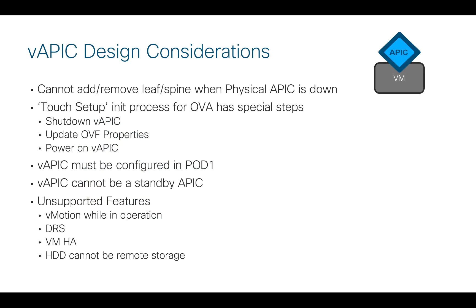There are some design considerations when using VAPIC with ACI Mini. You have the one physical APIC doing all of the work while the VAPICs are merely synchronizing the config and will never come into play until the physical APIC actually fails. But when that physical APIC fails or is down, you cannot add or remove leaves or spines, because we need that layer two adjacency in order to discover and add or remove physical nodes in the ACI fabric over LLDP.